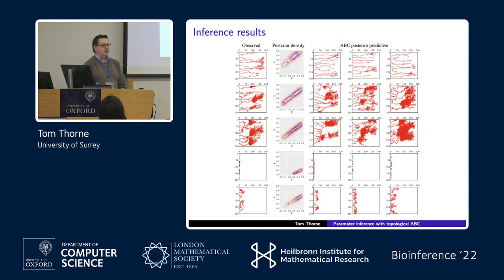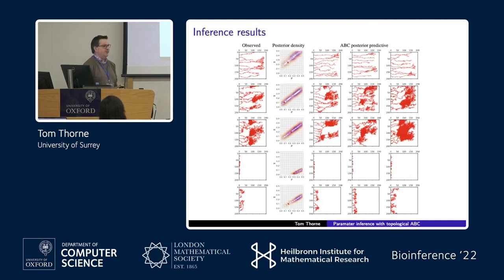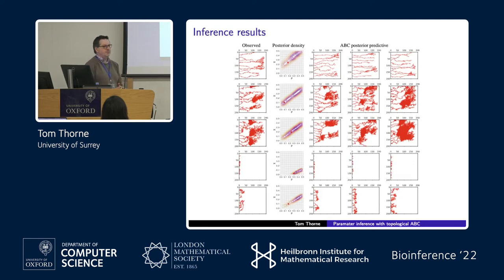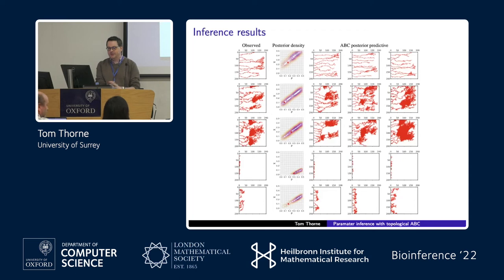Looking at the results of applying this to simulated data: we generated 100 parameter values sampled randomly from the prior and performed posterior inference using ABC. Taking ABC posterior predictive samples — picking parameter values from the posterior and simulating data with those parameters — the predictive samples actually correspond quite nicely to the behaviour observed in the data we're basing our inference on. Different regimes and classes of behaviour appear, which correspond quite nicely to the different classes found in the previous work.